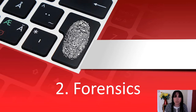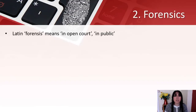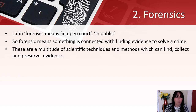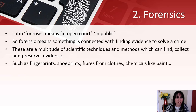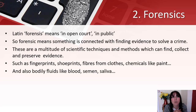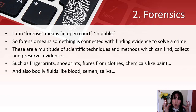Number two: forensics. This is from the Latin 'forensis' meaning 'in open court' or 'in public.' Forensic means something connected with finding evidence to solve a crime. These are a multitude of scientific techniques and methods which can find, collect, and preserve evidence such as fingerprints, shoe prints, fibres from clothes, chemicals like paint, and bodily fluids like blood, semen, and saliva. The cases we studied in 1.1 — like the Meredith Kercher/Amanda Knox case — can be brought in here where relevant; they had so much forensic material but it wasn't enough.